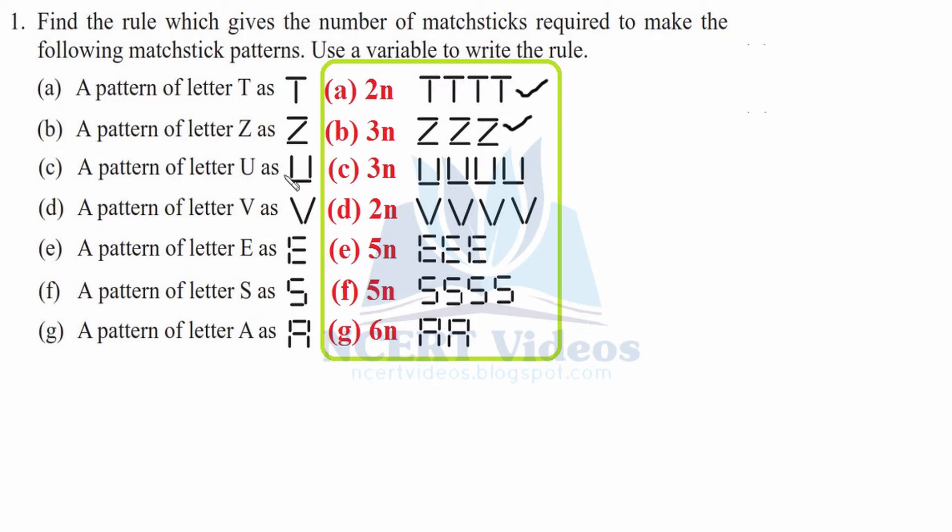Now a pattern of letter U. U is made up of 3 matchsticks. So if we want to make 4 of them, we will require 12 matchsticks. We can also get it from the formula as well: 4 times 3 equals 12.